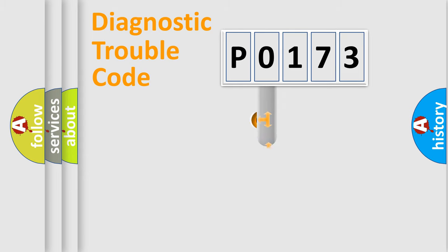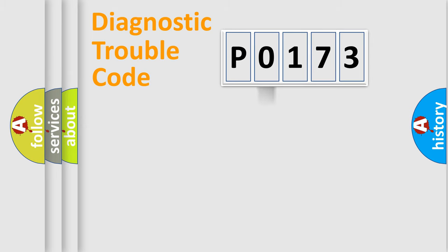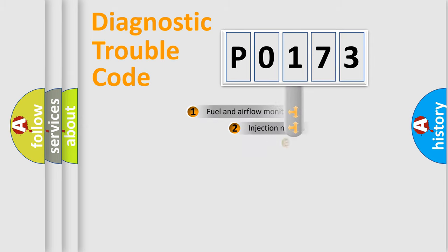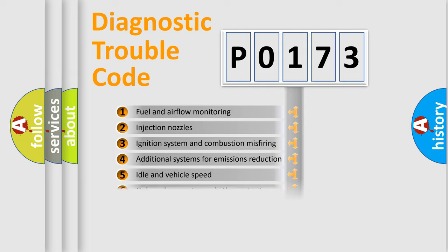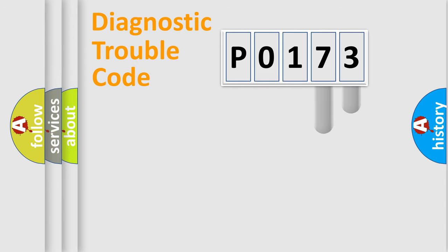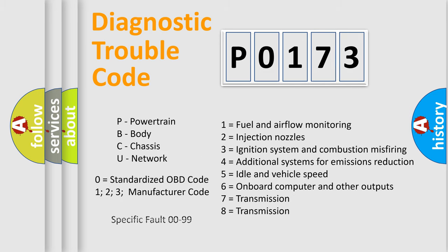This distribution is defined in the first character code. If the second character is expressed as zero, it is a standardized error. In the case of numbers 1, 2, 3, it is a more car-specific error. The third character specifies a subset of errors. This distribution is valid only for the standardized DTC code, and only the last two characters define the specific fault of the group.